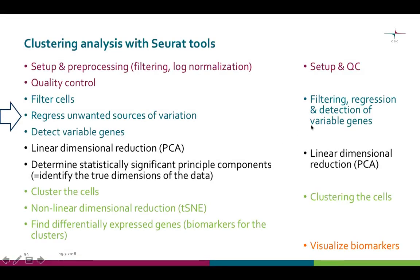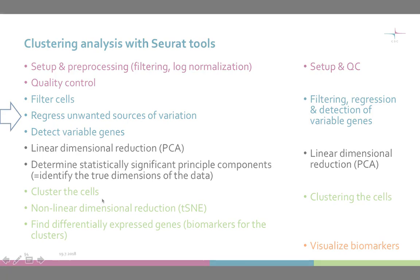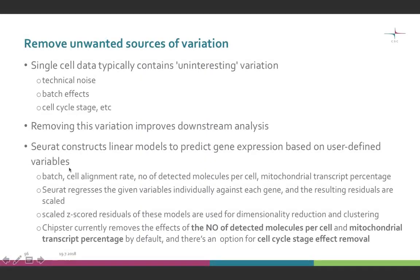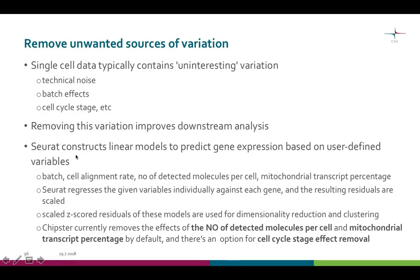The title of the Seurat tool, Filtering, Regression and Detection of Variable Genes, promises that you can regress out variation from uninteresting sources. This is done to ease the dimensionality reduction and clustering steps later on. What happens inside this tool is construction of linear models for gene expression based on user-defined variables, from which those unwanted factors are then regressed out.